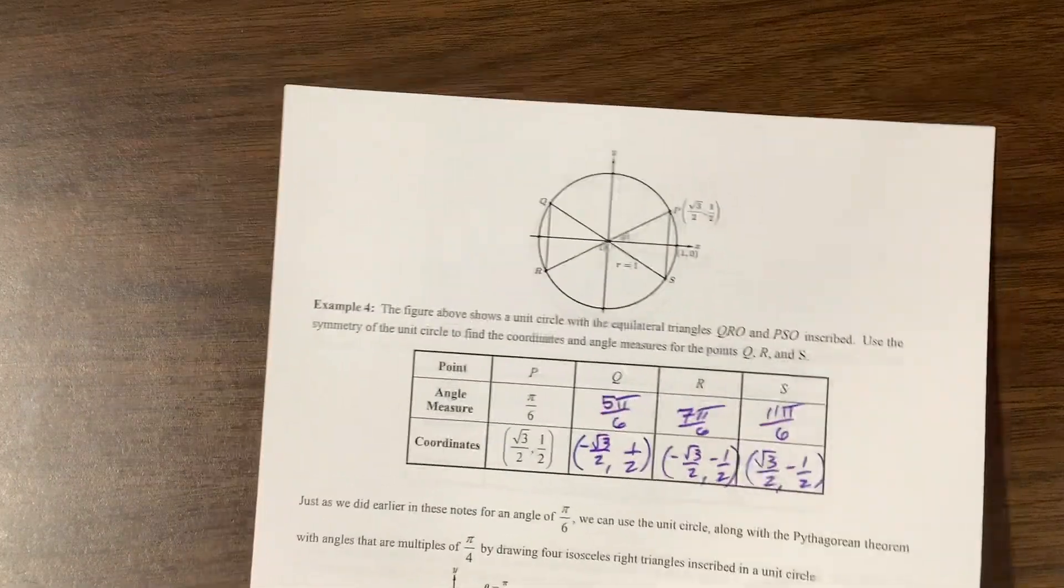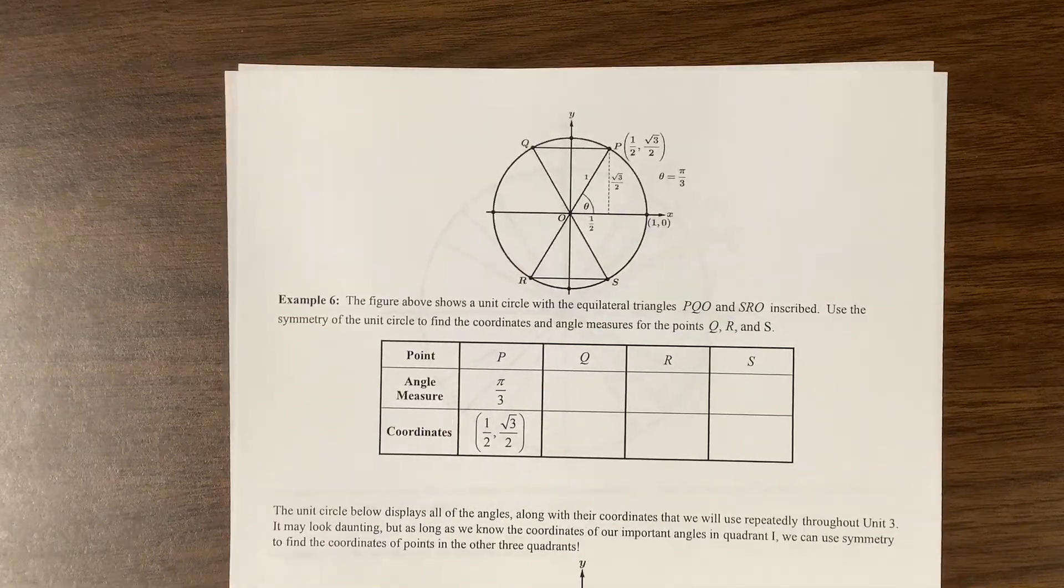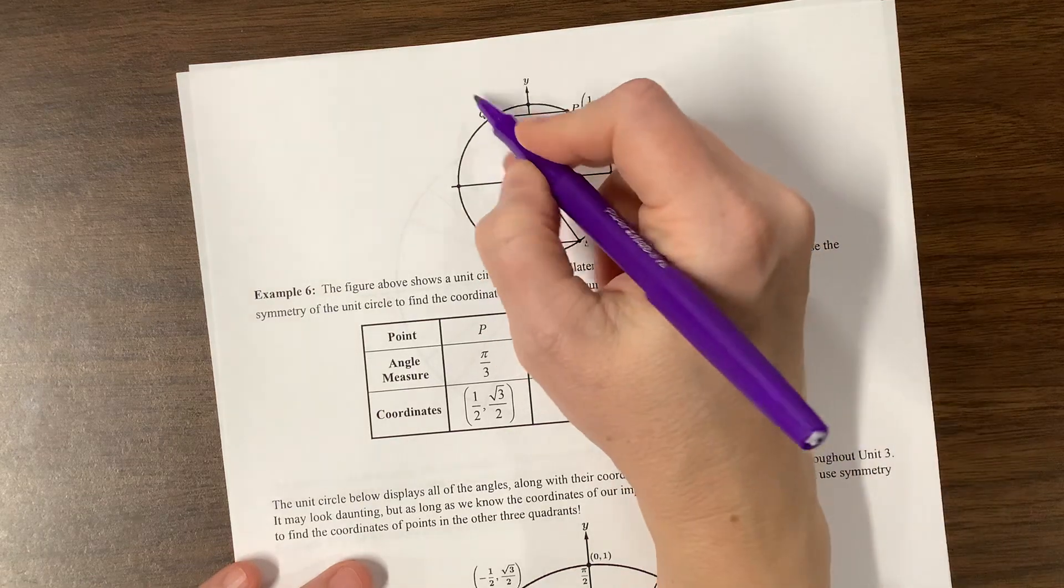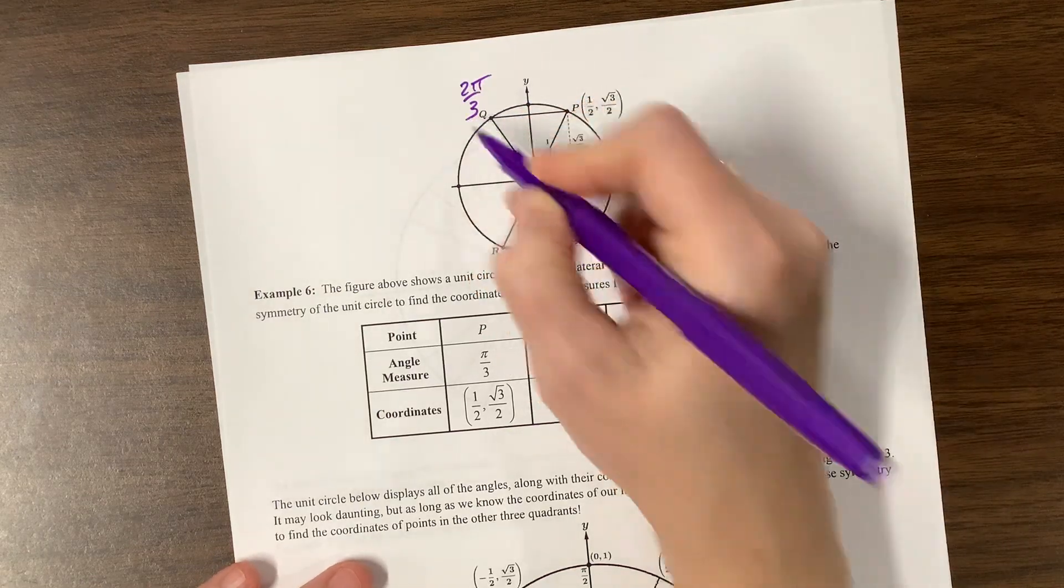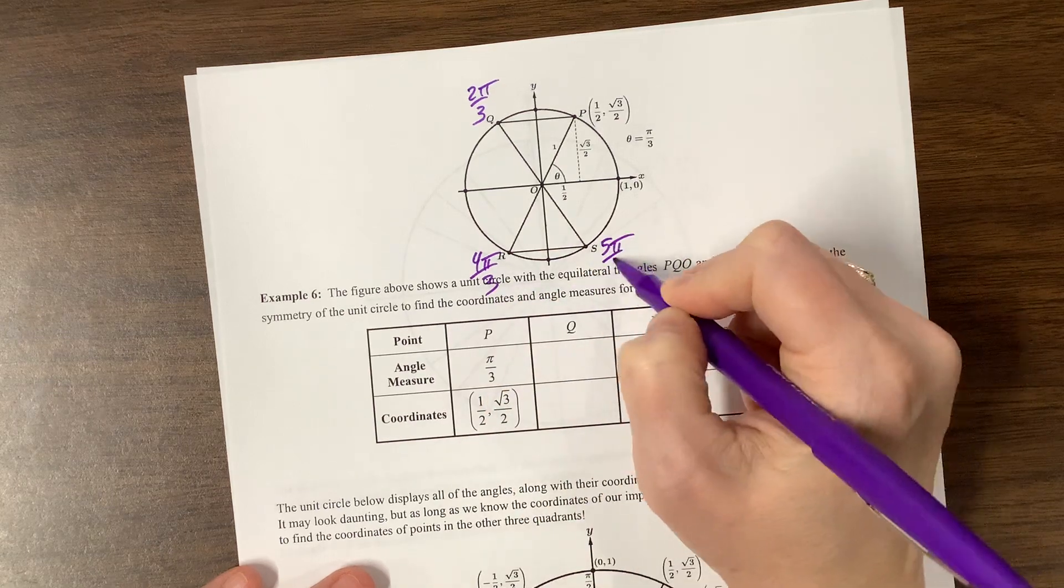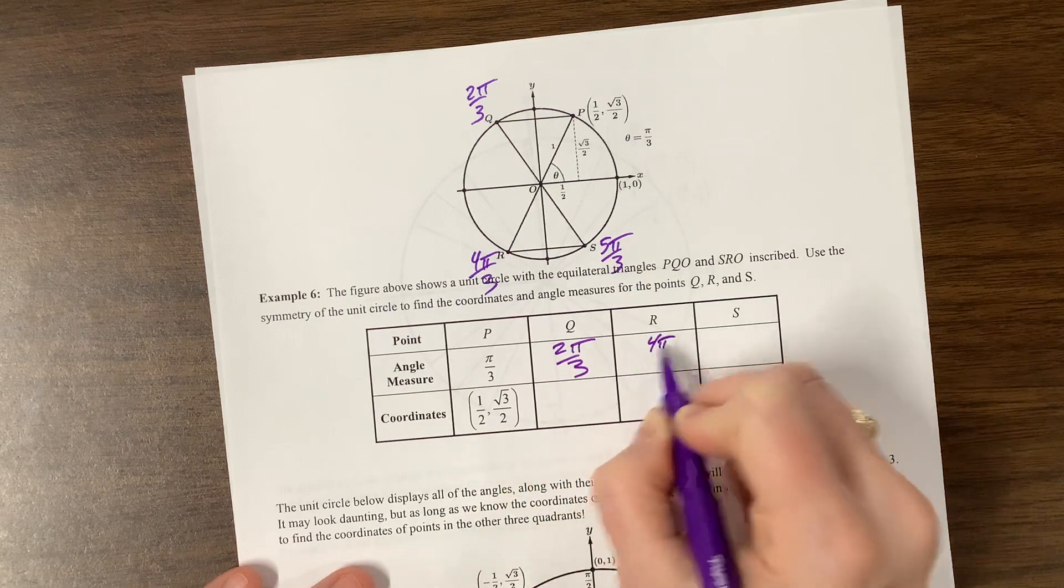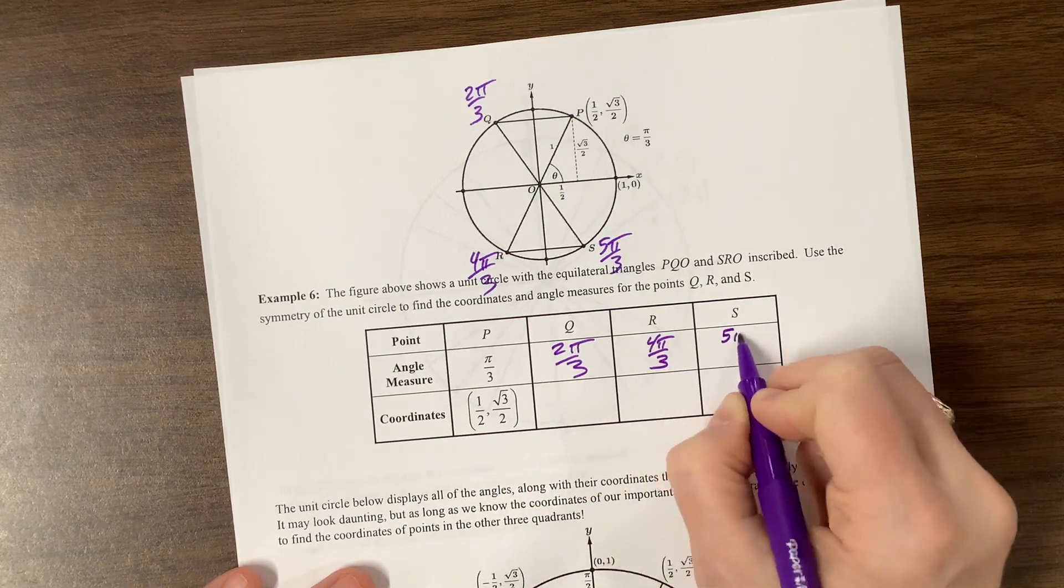And then I bet he's going to do the pi over 3 family. Let's see if I'm right. The pi over 3 family. So here's 1 pi over 3. This becomes 2 pi over 3. This is 4 pi over 3 down here. And here we have 5 pi over 3. So q is 2 pi over 3, R is 4 pi over 3, S is 5 pi over 3.